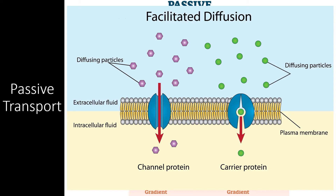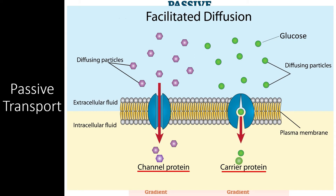Facilitated transport is required for ions and large molecules. Ions cannot pass through the plasma membrane because they carry a charge and are blocked by the hydrophobic core, so they must pass through hollow proteins known as channel proteins. Large molecules, such as glucose, are simply too large and polar to pass through the small gaps in the plasma membrane. These molecules are also too large for channel proteins, so they require a special carrier protein. These large molecules enter the carrier protein and bind to the active site, which changes the conformation of the protein, causing it to open on the other side of the membrane, releasing the molecule and resetting the process. We will cover both of these transport proteins further in section 2.7.